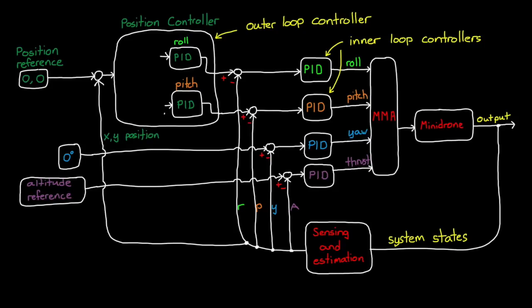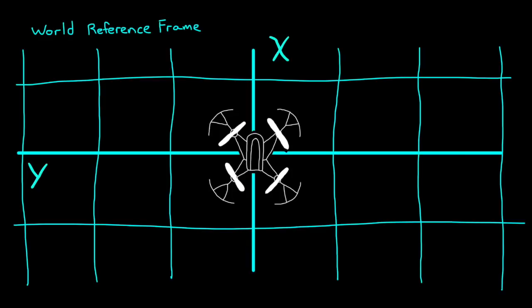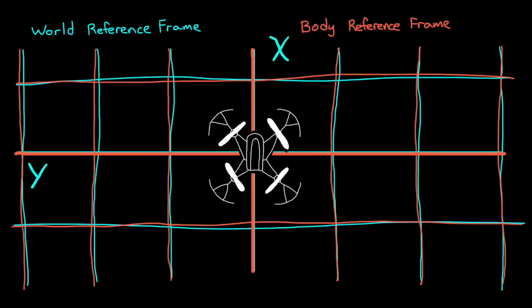Now, as a quick side note, the measured yaw angle also feeds into the position controller. The reason, very briefly, is that the X, Y position error is relative to the ground, or the world reference frame. Whereas roll and pitch are relative to the body of the drone. Therefore, pitch doesn't always move the drone in the X world direction.